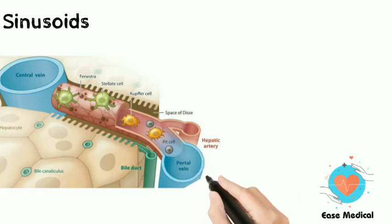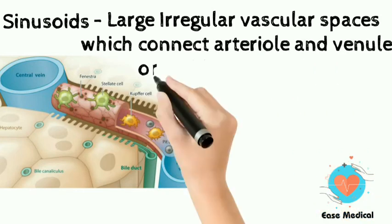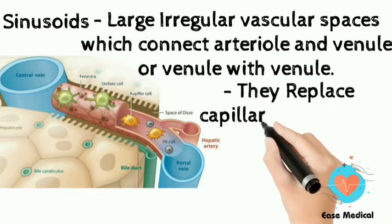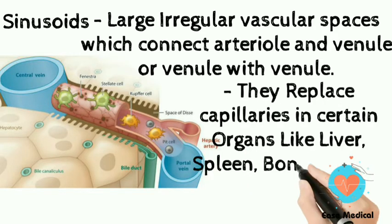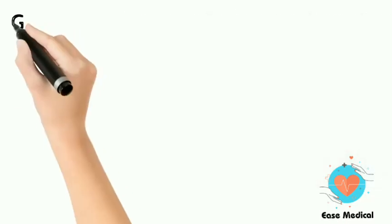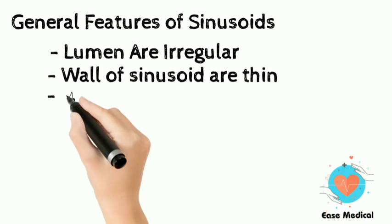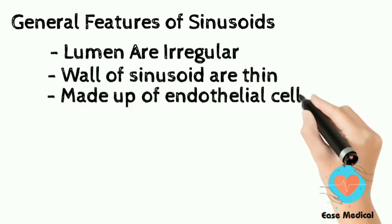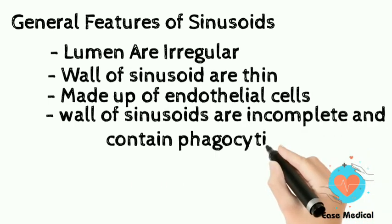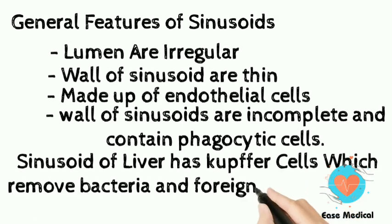Sinusoids connect arterioles and venules, or venule with venule. They replace capillaries in certain organs like the liver, spleen, bone marrow, suprarenal glands, and parathyroid glands. General features of sinusoids: their lumen is irregular, their walls are thin and made of endothelial cells, and the walls of hepatic sinusoids are incomplete and contain phagocytic cells. Sinusoids of the liver have Kupffer cells, which remove bacteria and foreign particles from the blood.